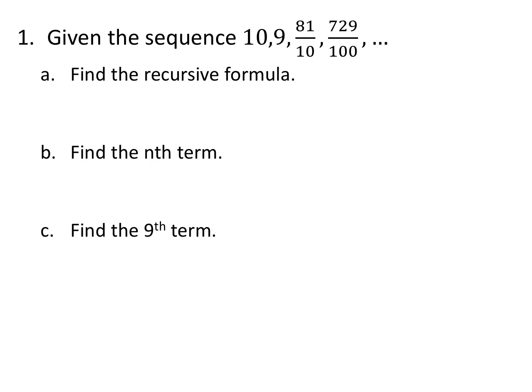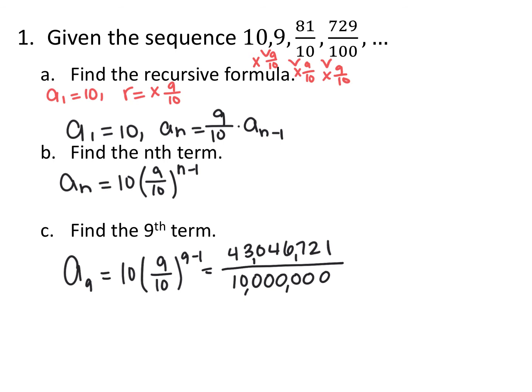Given the sequence 10, 9, 81/10, 729/100 — find the recursive formula, the explicit formula, and the 9th term. The common ratio is 9/10 every single time, and the first term is 10. Recursive formula: a₁ = 10 and a_n = (9/10) · a_{n-1}. Explicit formula: a_n = 10 · (9/10)^{n-1}. For the 9th term, plugging in 9 for n gives 43,046,721 over 10 million.